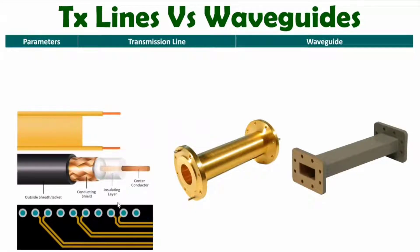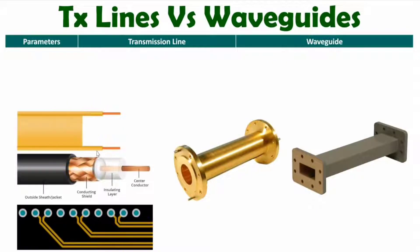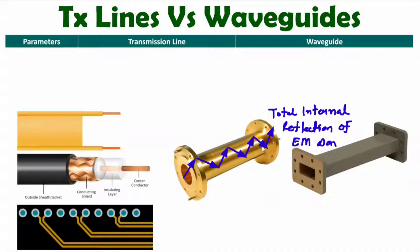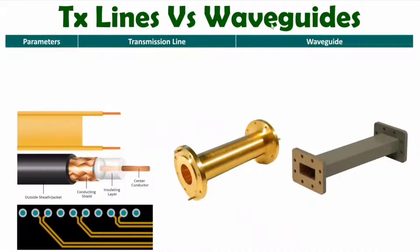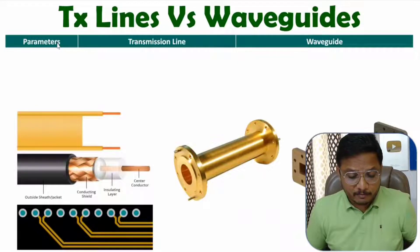In a transmission line, signal propagation happens based on coupling of the signal between two parallel wires, while in a waveguide signal propagation happens based on total internal reflection. In this video I'll be comparing transmission line with waveguide based on different parameters.